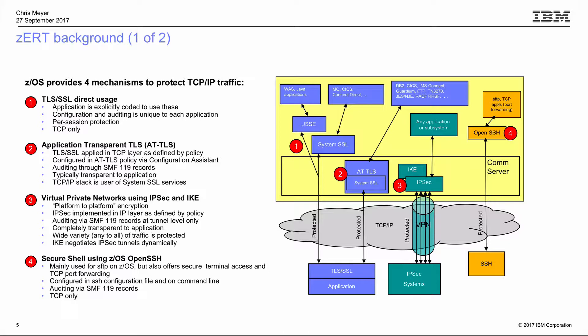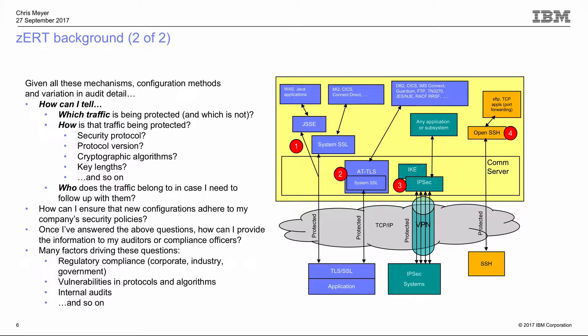So that's the landscape for protecting your network traffic on z/OS — you have quite a bit of capability. But given all of that, there are many configuration methods and a lot of variation in audit trail detail. How can you tell which traffic into and out of your z/OS system is being protected at all? And for traffic that is protected, how do you tell which protocol is being used, what version, what cryptographic algorithms, and what key lengths?